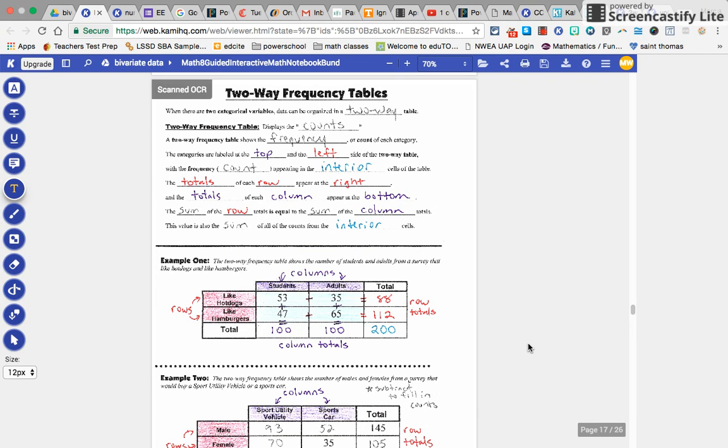The categories are labeled at the top and the left side of the two-way table, with frequency counts appearing in the interior cells of the table. The totals of each row appear to the right and totals of the column appear at the bottom. The sum of each row total is equal to the sum of the column totals. So this value is also the sum of all the counts from the interior cells.